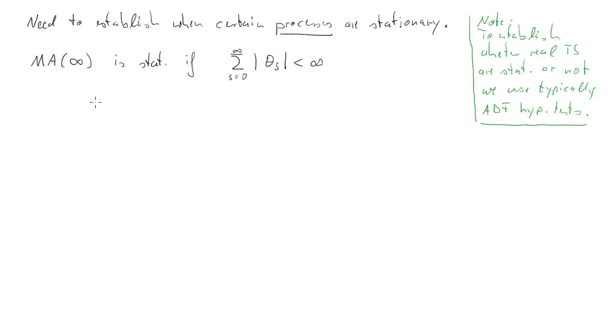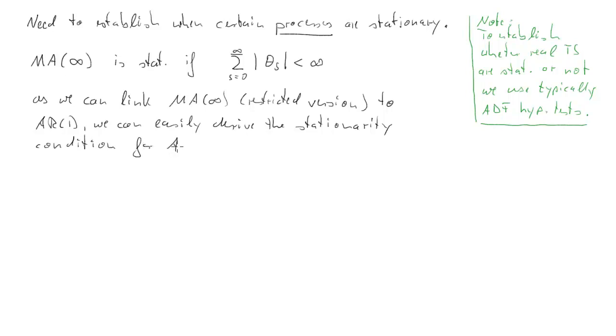So for the MA(∞), we established previously that it is stationary if the absolute summability condition is met. As we can link the MA(∞) or restricted version to the AR(1), we can use that restriction to also find what the condition for an AR(1) process is for stationarity. So the restriction was that θₛ equals φ₁ times θₛ₋₁. That led to θₛ being equal to φ₁ to the power of s and to our AR(1) representation of that particular process.